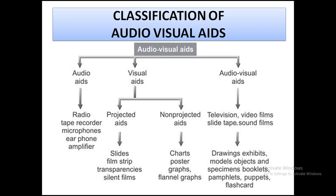In audio aids, we use radio, tape recorder, microphones, earphones, and amplifiers. In visual aids, there are two types — projected and non-projected. Projected aids include slides, filmstrips, transparencies, and silent films. Non-projected aids include charts, posters, graphs, and flannel graphs. In audio-visual aids, we can see television, video films, slide tapes, sound films, drawing exhibits, models, specimens, booklets, pamphlets, and flash cards. Teaching activities can also include trips, exhibitions, and museum visits.